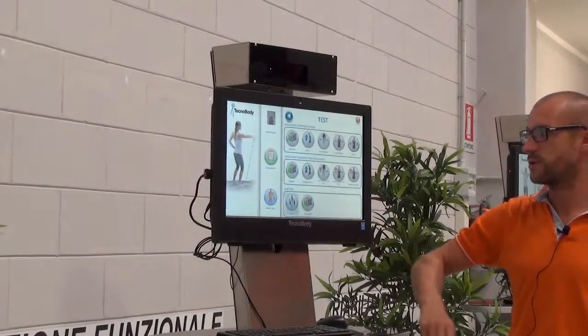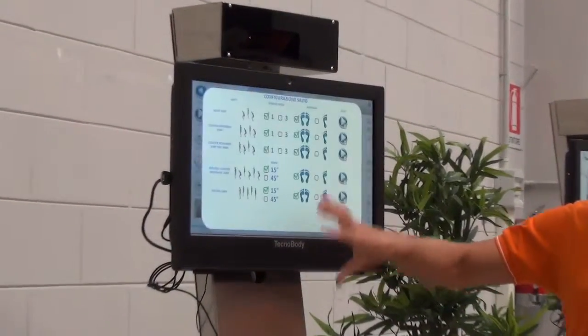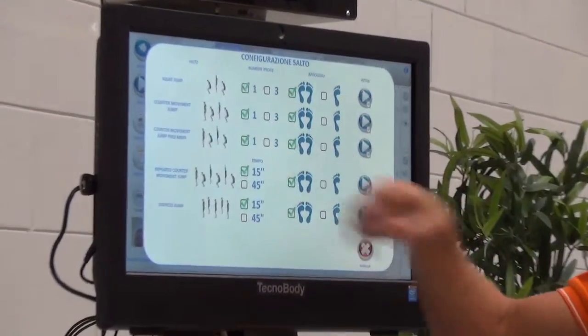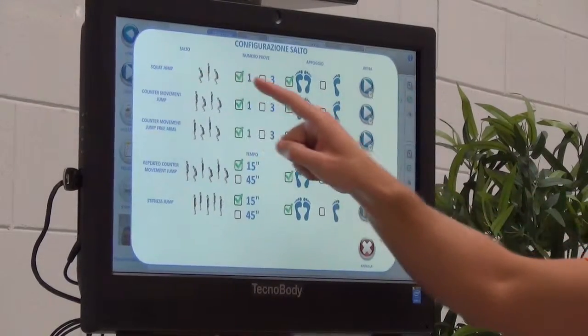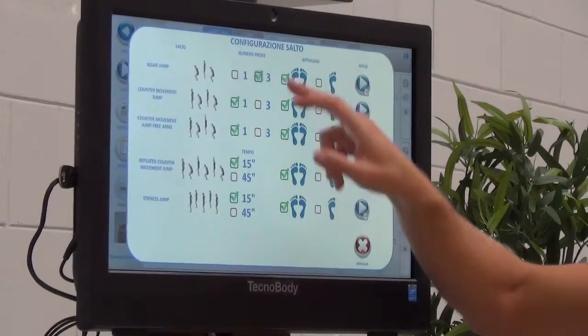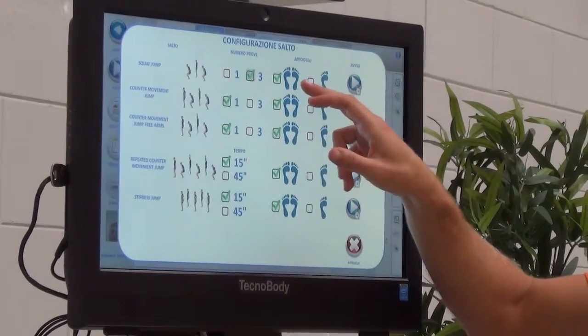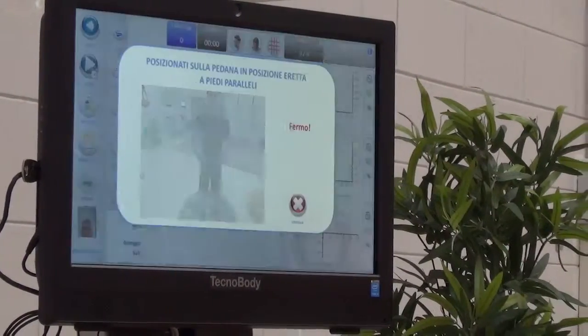I'm going on the software inside the test, inside the jumps. I'm going to select the kind of jump that I want to analyze. In this case will be the squat jump. I'm going to analyze the three jumps, two legs jumps, and I'm going to start.